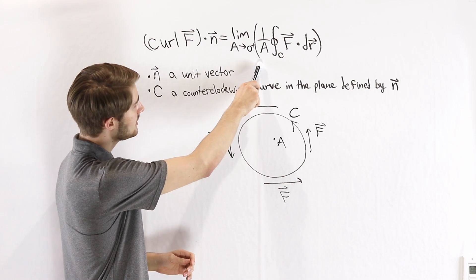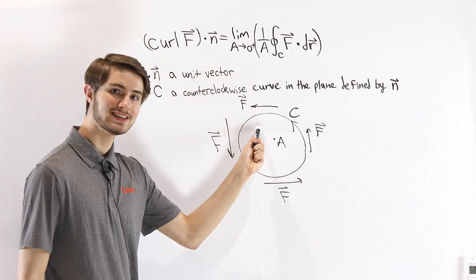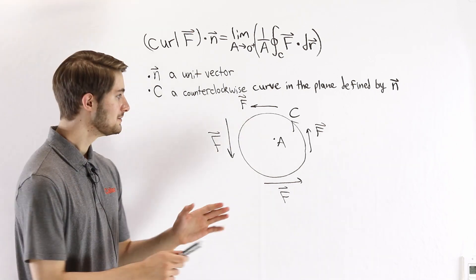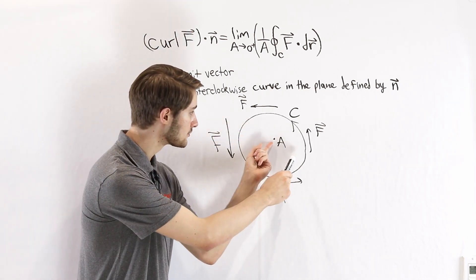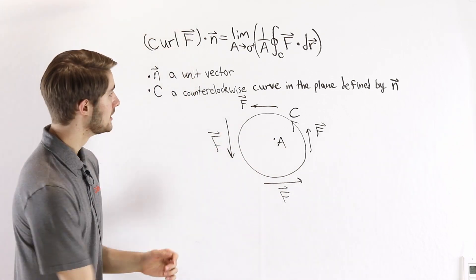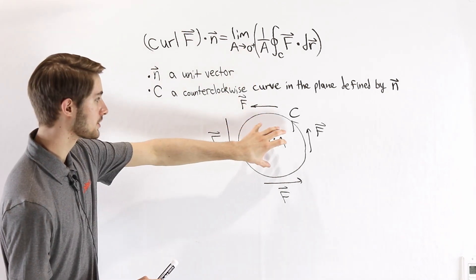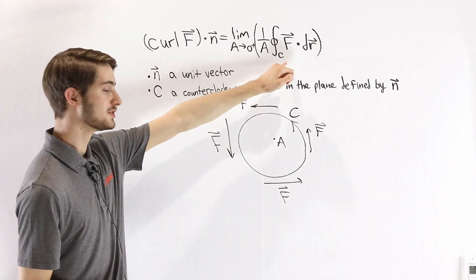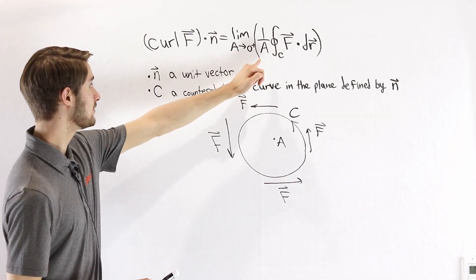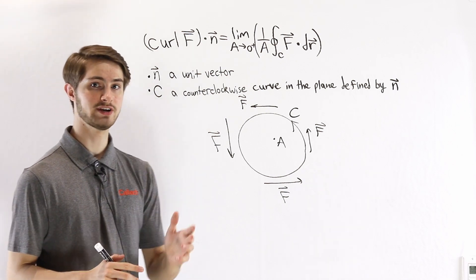We see on the right side of the equation that we're taking the limit as the area inside of this curve approaches zero. So we're going to make this curve smaller and smaller, closing in on our point A where we're evaluating the curl. The reason that we divide by the area is that as we make the curve smaller, the value of this line integral is also going to get smaller. So we have to account for that by dividing by the area to make sure that we're approaching a finite value.